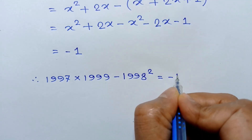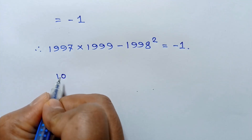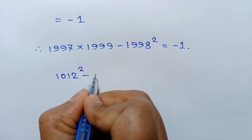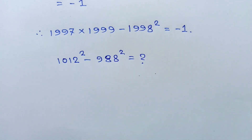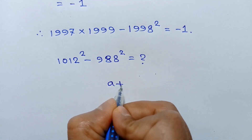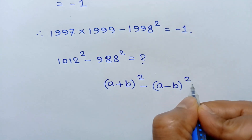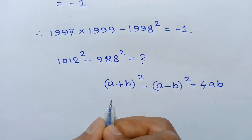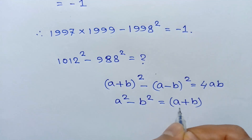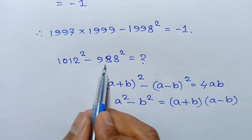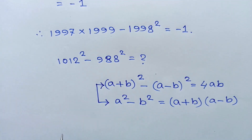I have a practice problem for you: 1012 squared minus 988 squared equals what? You can apply the formula (a plus b) whole squared minus (a minus b) whole squared equals 4ab, or a squared minus b squared equals (a plus b)(a minus b). Both formulas can be applied here — write your answer in the comment section below.